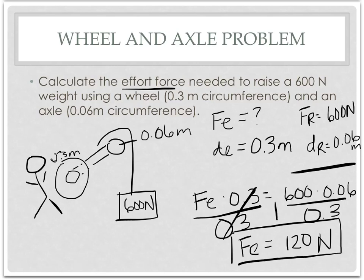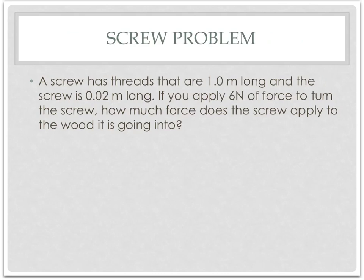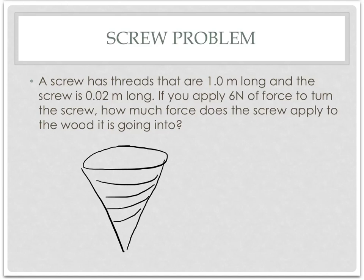Now, one last type of machine. We're going to talk about the screw today. So before we start applying it to the problem, a screw is kind of like this, and then it has threads that go around. So a screw is going to have a height, and it's also going to have a thread length.